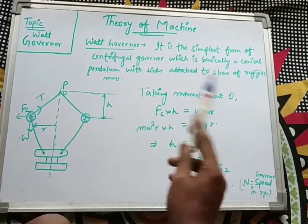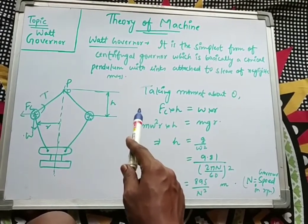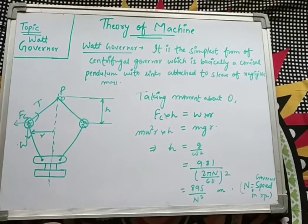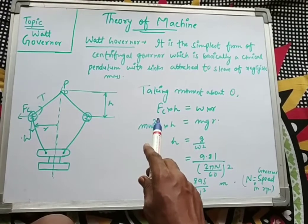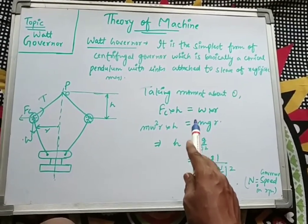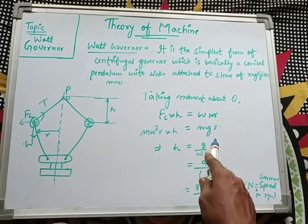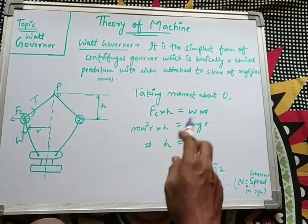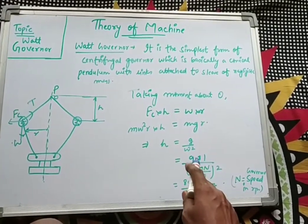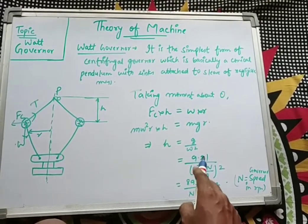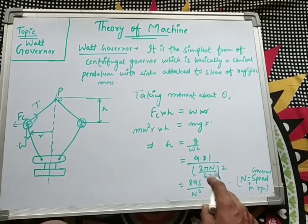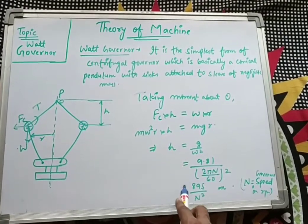Now solving this: substituting the centrifugal force formula Fc = m·ω²·r, and weight W = m·g, into Fc × h = W × r. We can cancel m and r from both sides, giving h = g / ω². Since ω = 2πN/60, substituting and simplifying with g = 9.81, we get h = 895 / N² meters, where N is the governor speed in rpm.